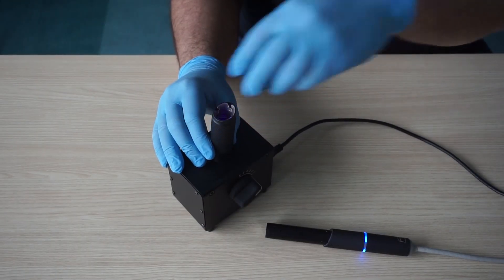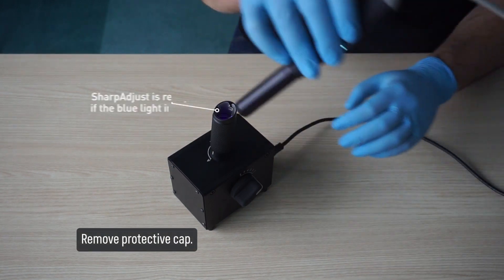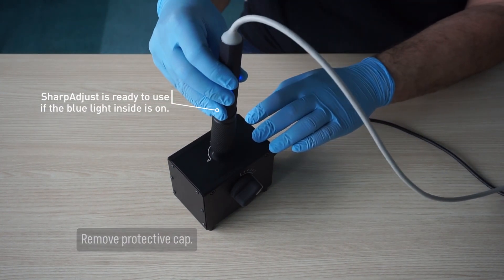Remove protective cap. Sharp Adjust is ready to use if the blue light inside is on. Slide handpiece in and click into position.